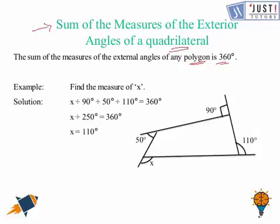So to find out the value of x here, we add all the external angles which is 50 degrees plus 90 degrees plus 110 degrees which is 250 degrees. So the last one would be 360 take away 250 which is 110 degrees.